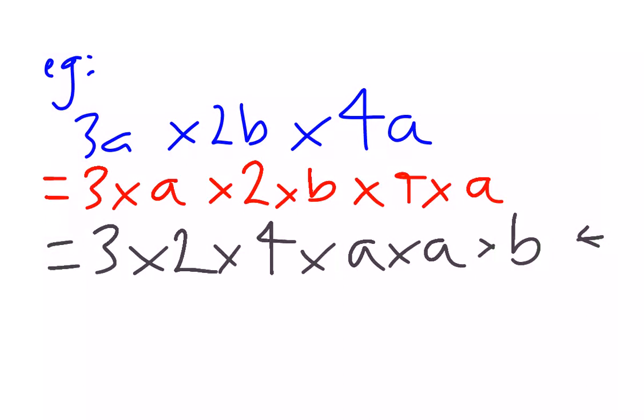3 times 2 is 6, 6 times 4, 24. a times a is a squared, and b. No times signs because, of course, we're down to an algebraic term now, and we don't use times signs.